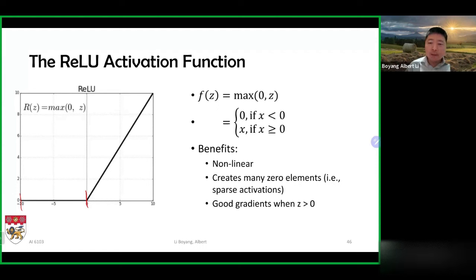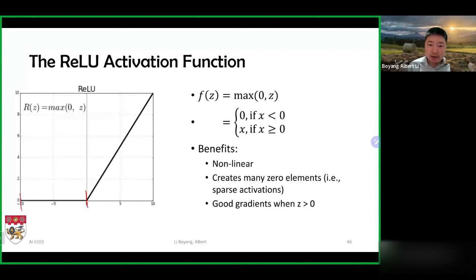Second, ReLU creates sparse activation — it pushes all negative elements toward zero, and sparsity sometimes acts as an effective regularization. When the input is greater than zero, it gives you a pretty good gradient: the gradient is one, and that alleviates some of the optimization problems we'll talk about in the next lecture.